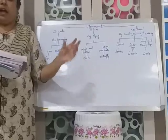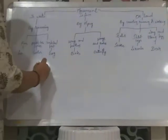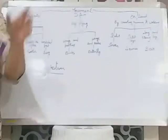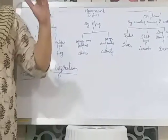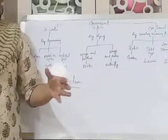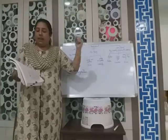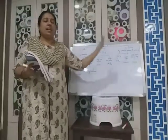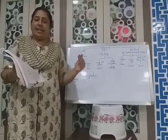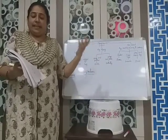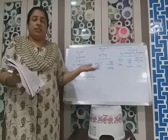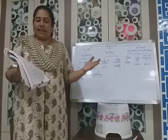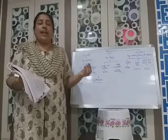Coming to migration among animals. What is migration? Migration means moving from one place to another. Some animals move great distances at certain times of the year. This mass movement of animals from one place to another is called migration. Animals migrate to escape harsh weather, to search for food, and to reach their breeding grounds.